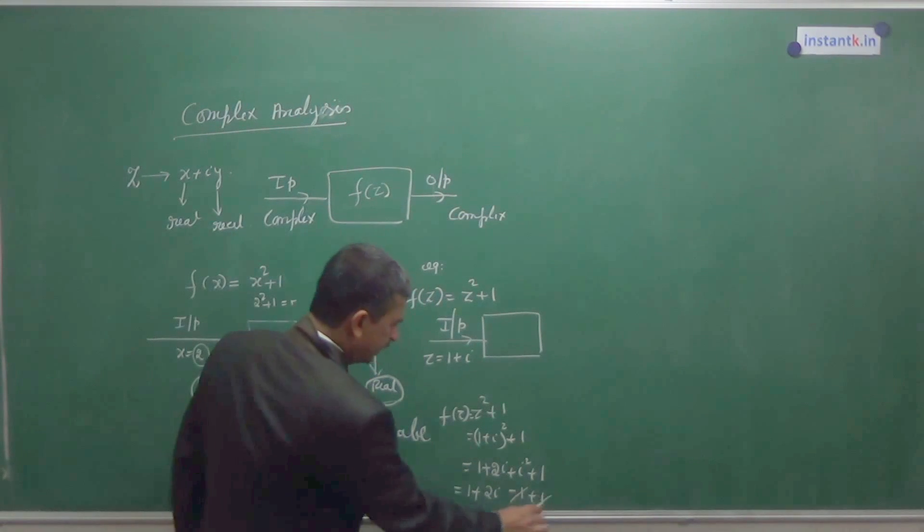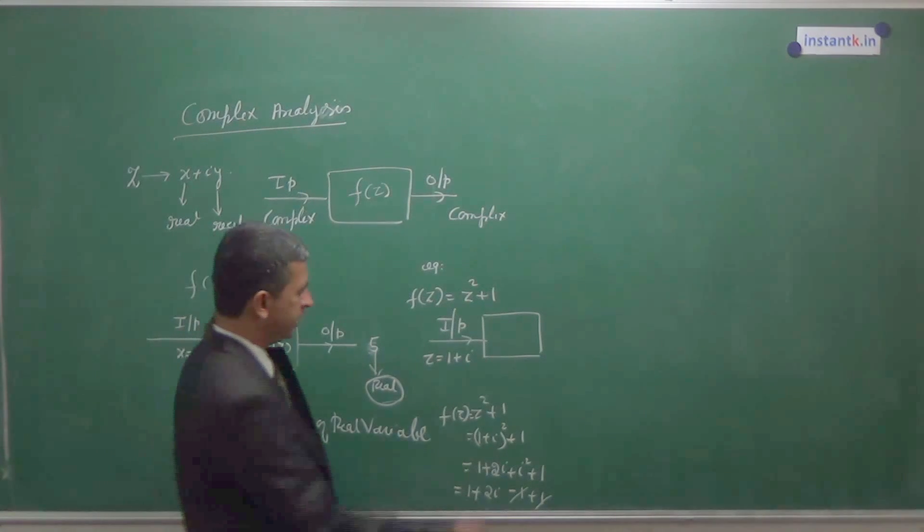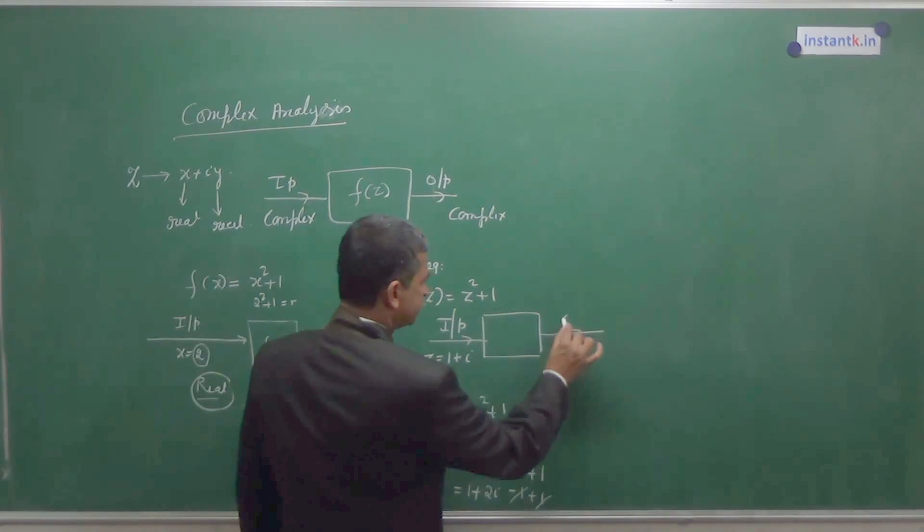So this minus 1 and plus 1 cancels. What you are getting is 1 plus 2i. So our output is 1 plus 2i.